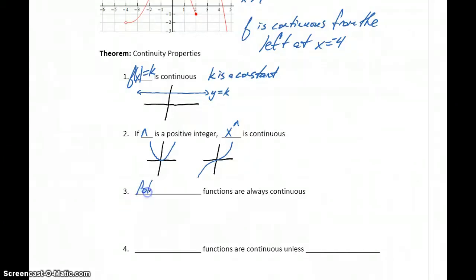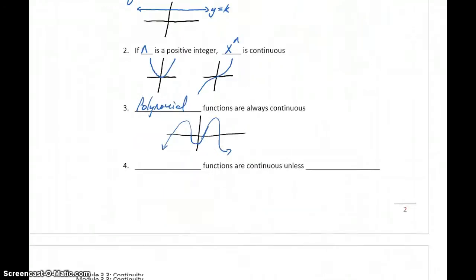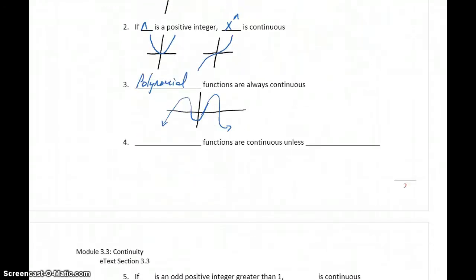We can also say that polynomial functions are always continuous. Polynomial functions are functions that can change directions multiple times. But even if we have a function that changes directions multiple times, there are never going to be any holes or breaks in a polynomial function. So polynomial functions are always continuous.